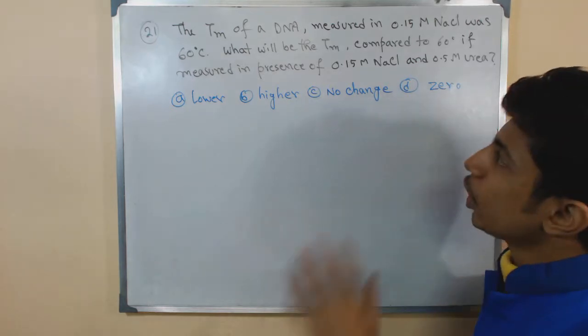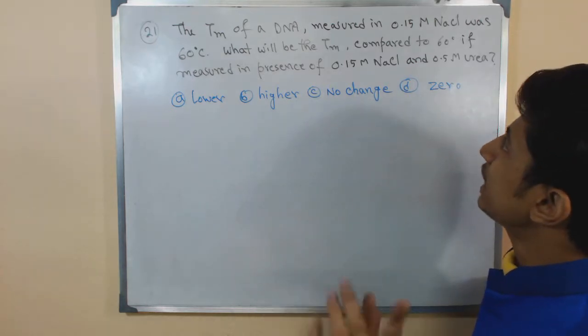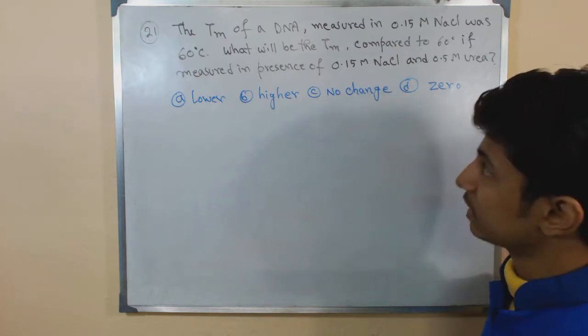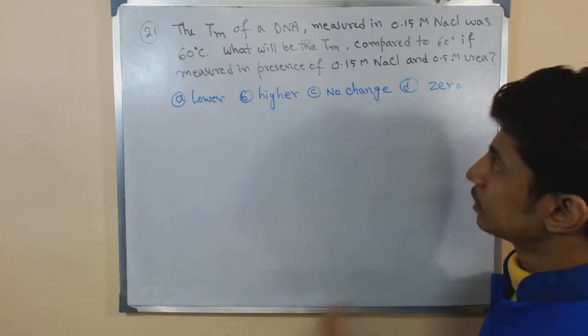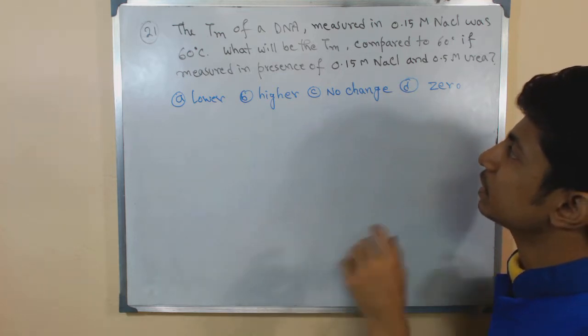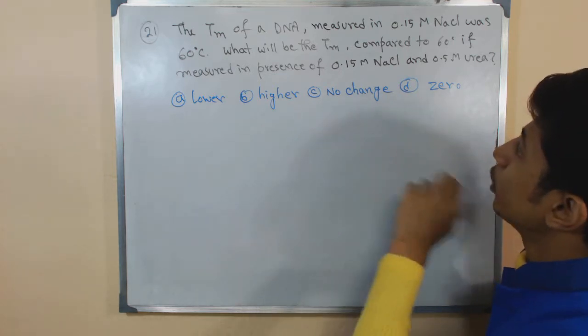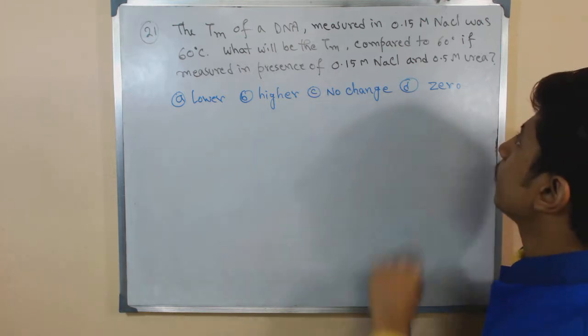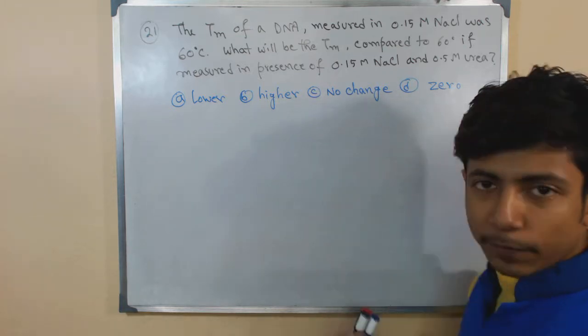The Tm, which is the melting temperature of a DNA measured in 0.15 molar NaCl was 60 degree Celsius. What will be the Tm compared to 60 degree Celsius if measured in presence of 0.15 molar NaCl and 0.5 molar Urea? So what is the phenomena?